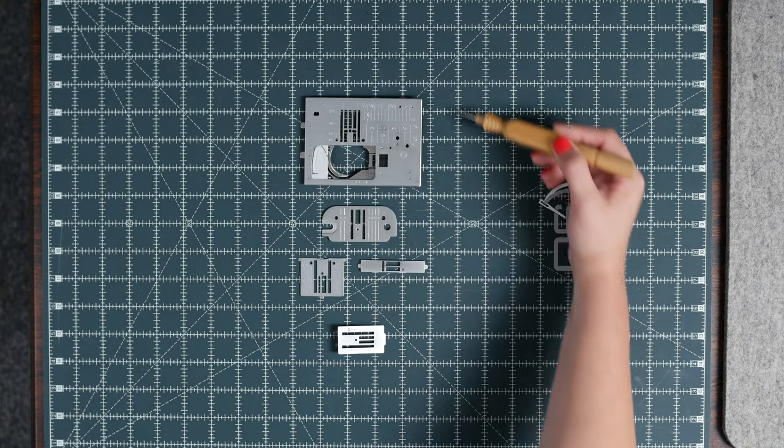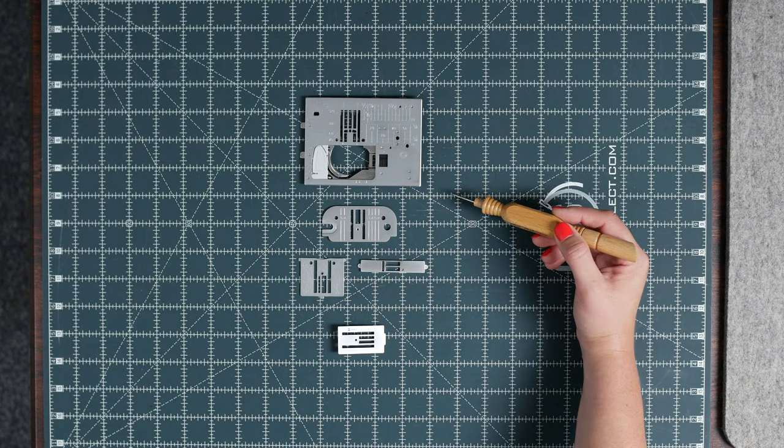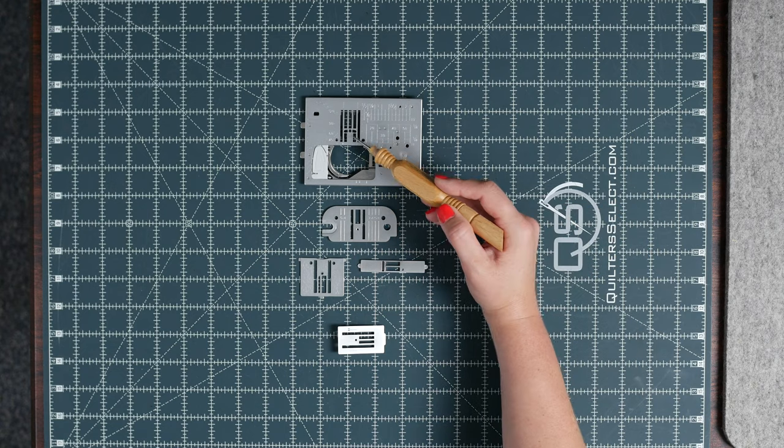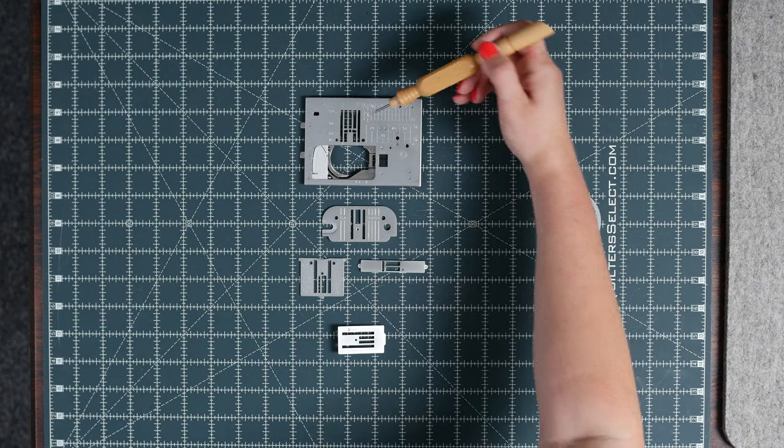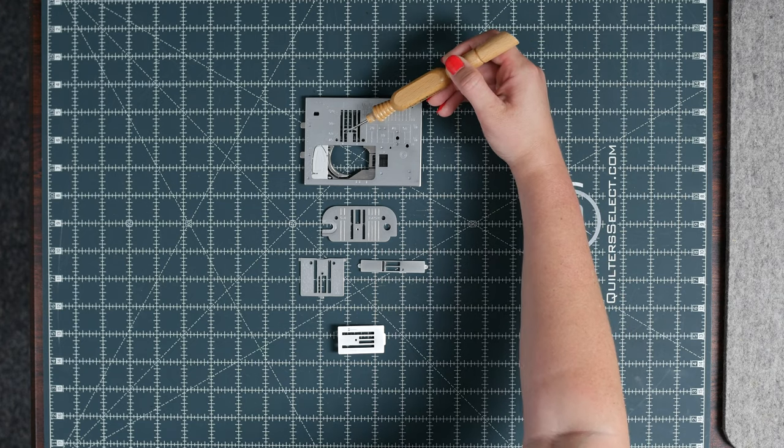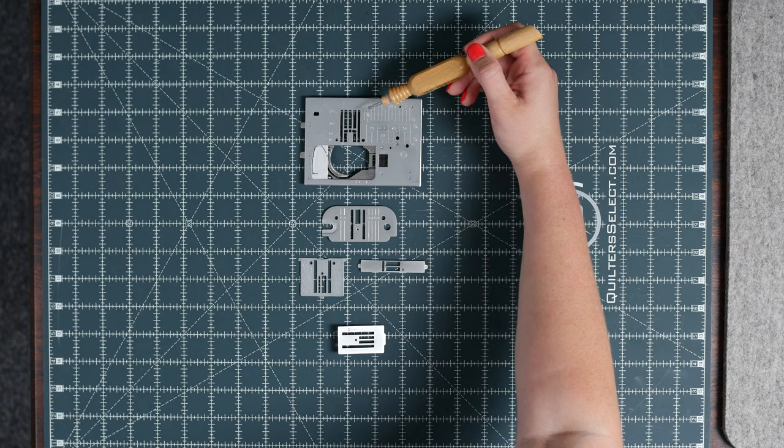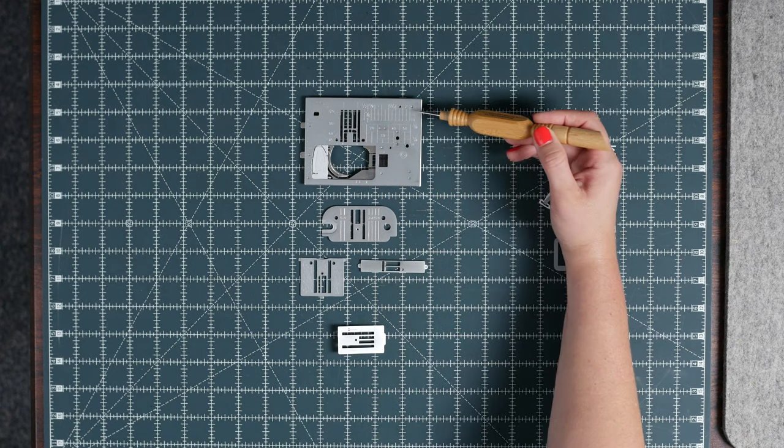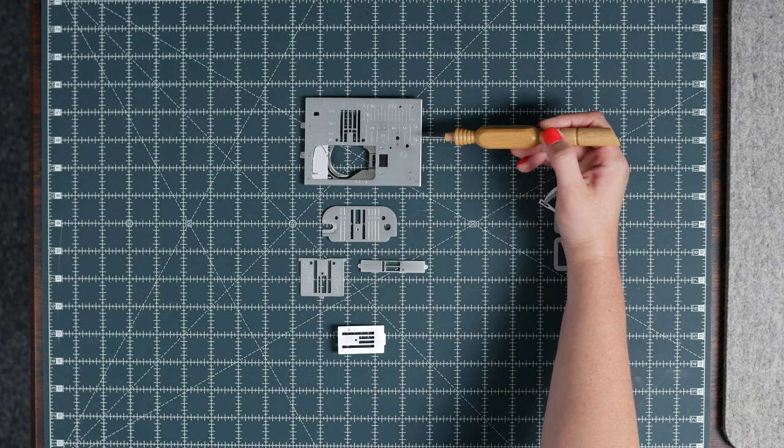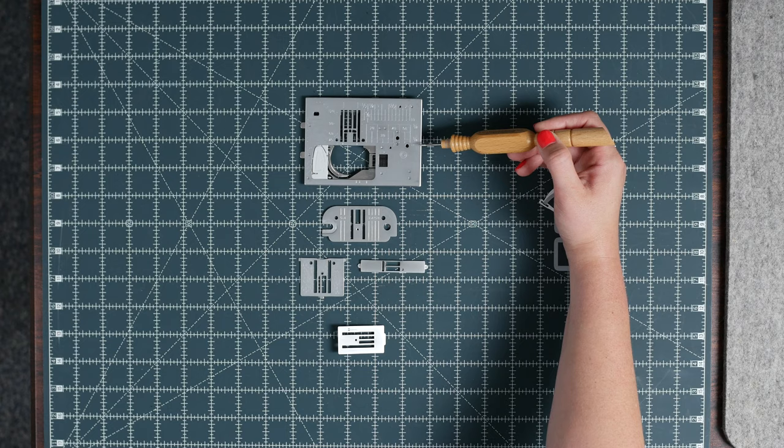I do absolutely love my straight stitch plate on my Janome machine. It not only has the one small opening but it gives you three options: left needle position, center, and right. That gives you more choices. Also it has a lot of different markings on the plate. Just be sure to check your manual. It's going to cover those specific markings for you.